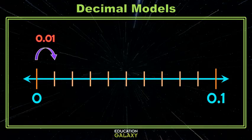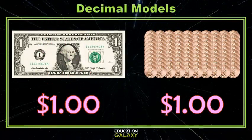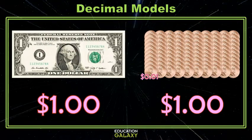Now, does this have a money example, too? It does, because we know that one dollar and a hundred pennies are both one dollar. That means that one penny is a hundredth of one dollar. Cool.